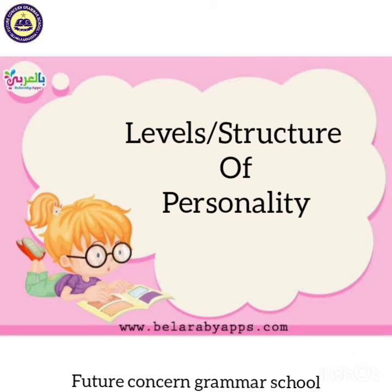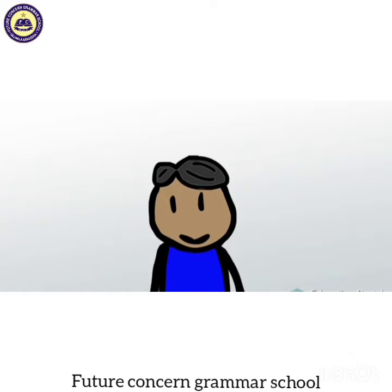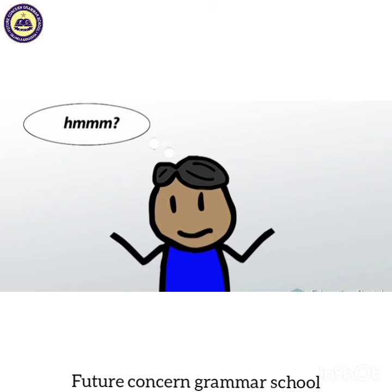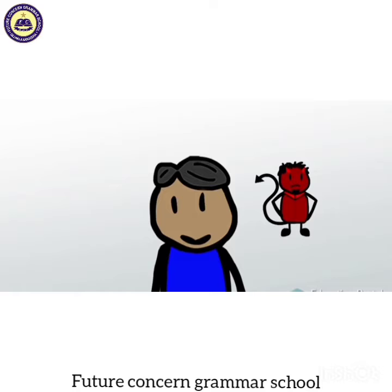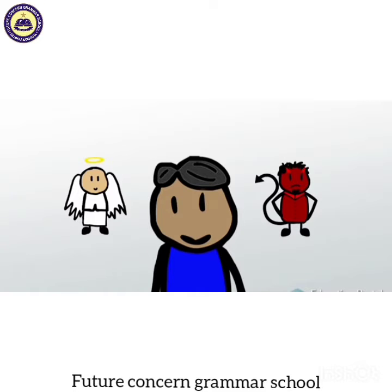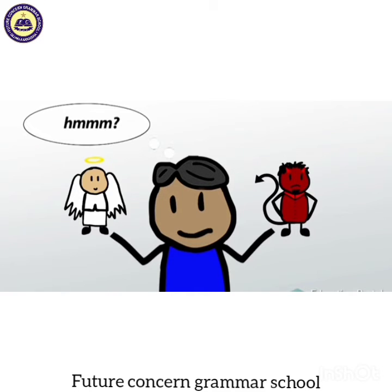Let's move on towards the levels of personality. Aapne aksar cartoons mein dekha hoga — whenever the main character is confronted with a choice, toh us kے left shoulder pe ek devil usse bad choices adopt karne ko kehta hai aur uske right shoulder par maujood angel use right choices opt karne ke liye encourage karta hai. Ab jo main character hai, woh middle mein stuck ho gaya hai and he is forced to make a decision.